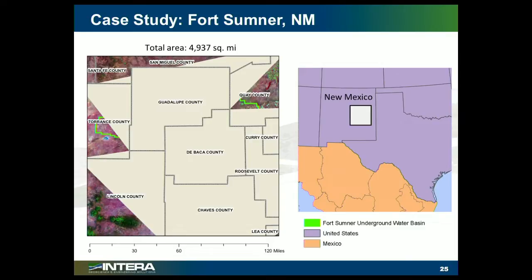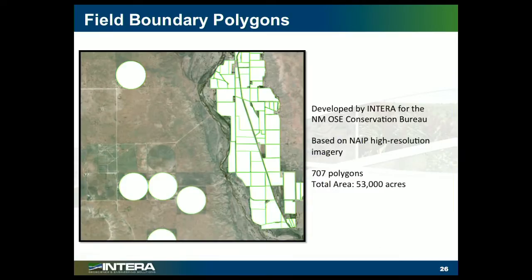This is an area in eastern New Mexico where we applied this method. The same challenge here with having to have the field boundary polygons — it's really important because the Landsat data are relatively coarse. You need to refine those data by going in and tracing around the actual agricultural areas you're aware of and having the field boundaries to constrain the analysis.